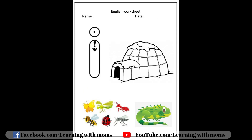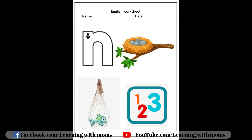E is down with a dot. N is down. Go up and bumpity.